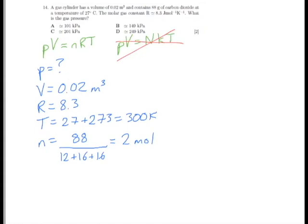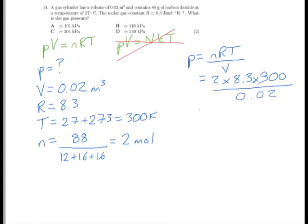Now it's a matter of plugging this into our rearranged equation. So P equals nRT divided by V. So that's 2 times 8.3 times 300 divided by 0.02, which we can simplify to 4980. You'd have to do some multiplication to get to that, divided by 2 times 10 to the minus 2.